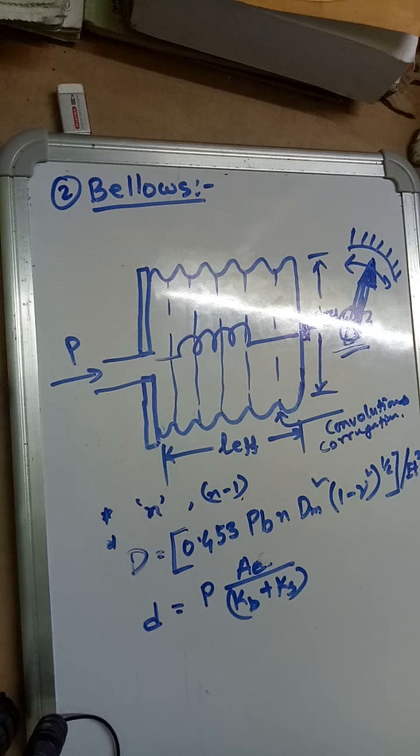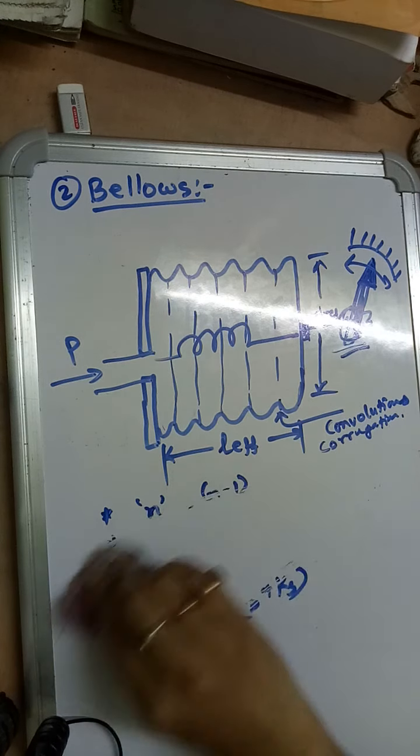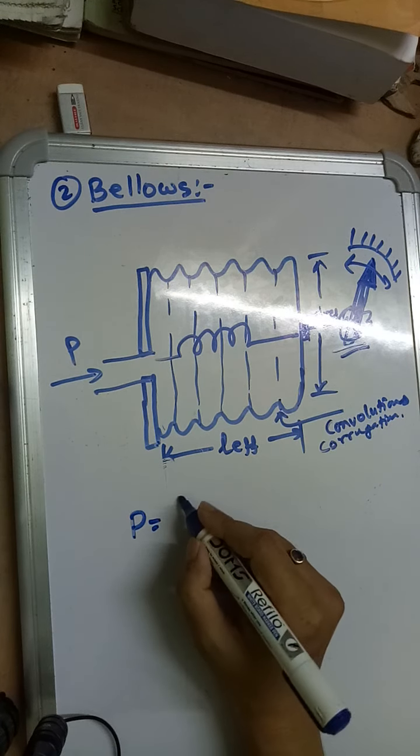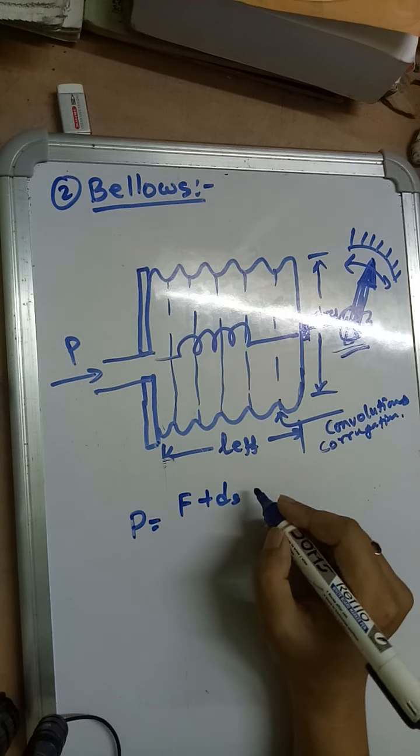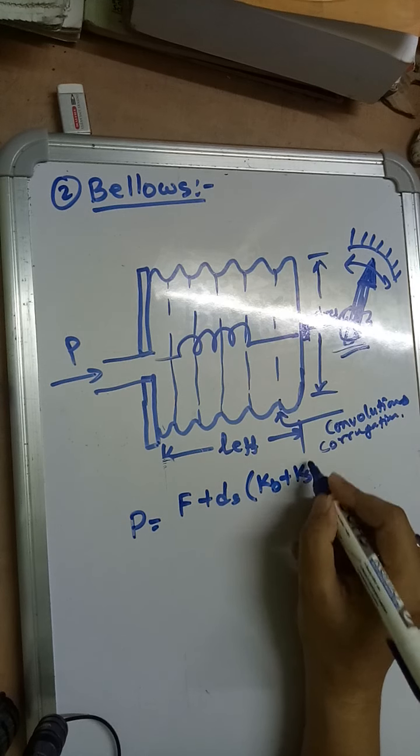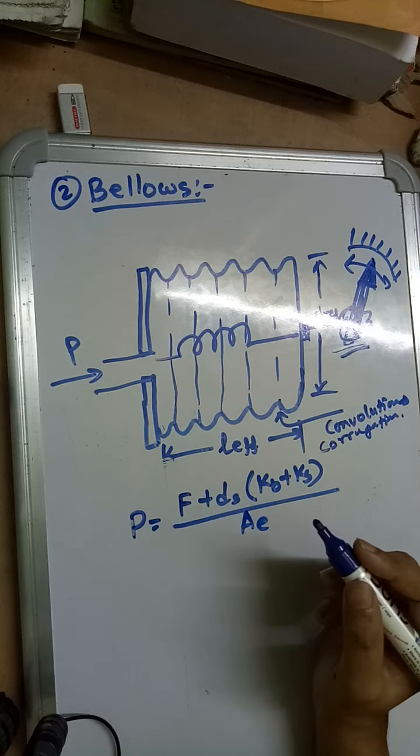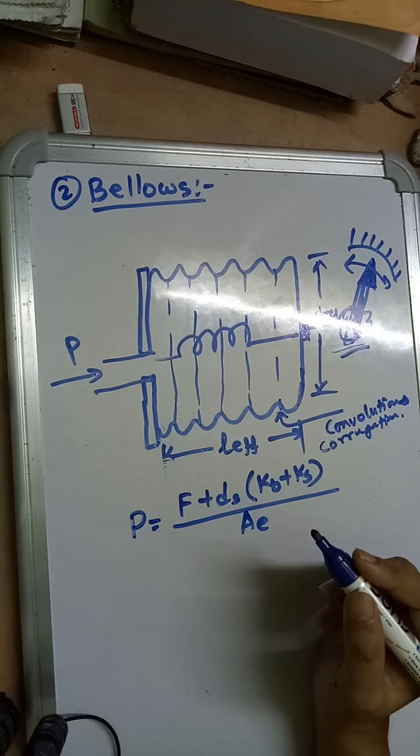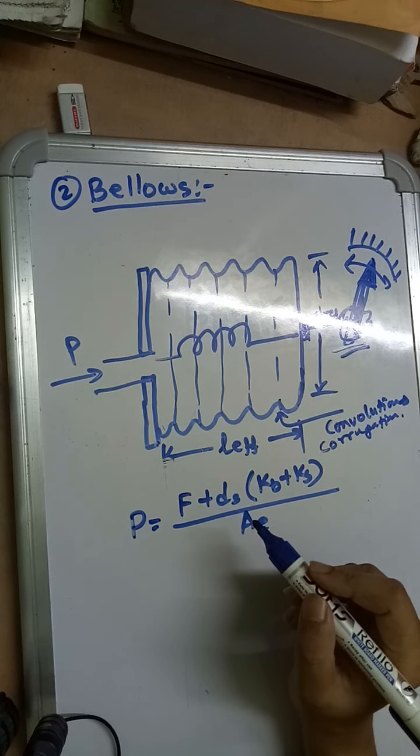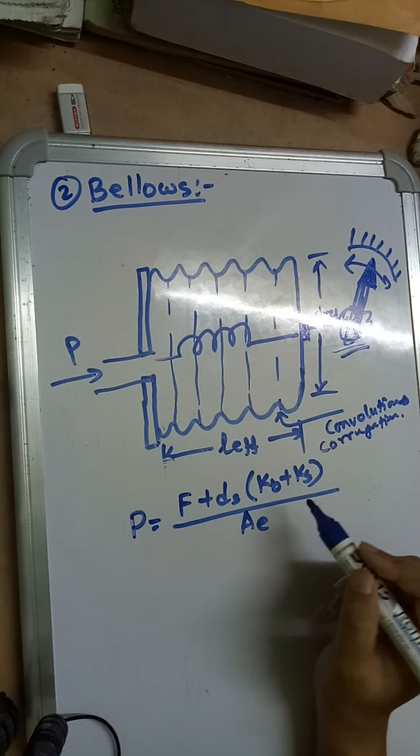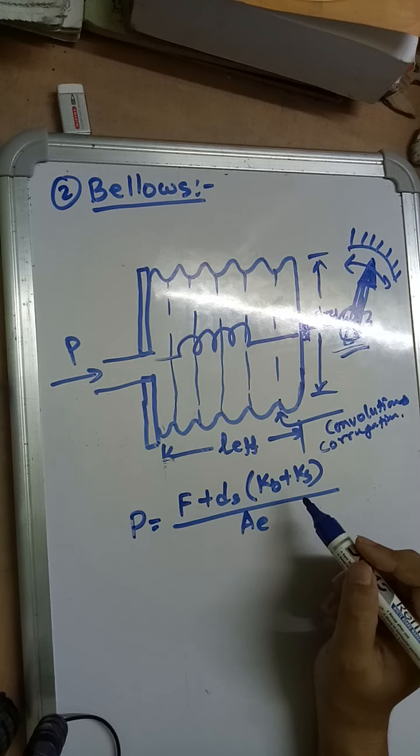If the bellows assembly is to be operated by some electrical switch or mechanism at its free end, then the pressure will be given by p = (F + d_s × (k_b + k_s)) / A_e. Here, F equals the force required to operate the switch or mechanism, d_s equals deflection required to operate the switch mechanism.